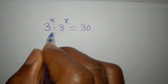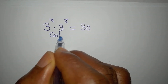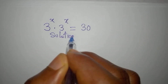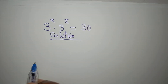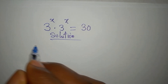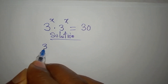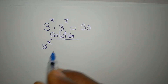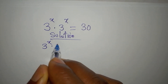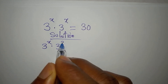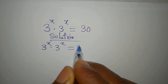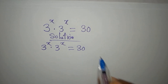Hello everyone, let's solve this right away. We have 3 to the power of x multiplied by 3 to the power of x equals 30.